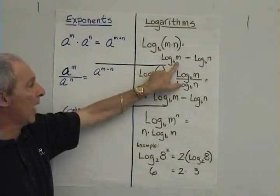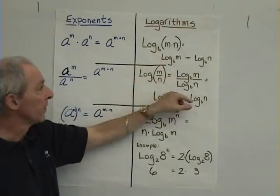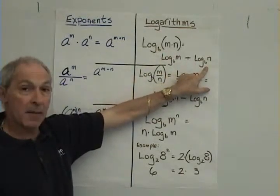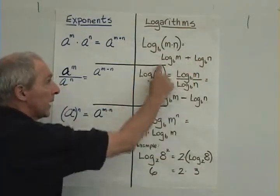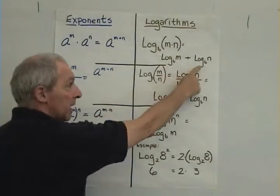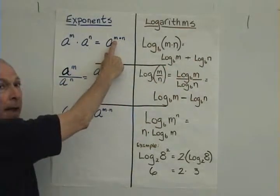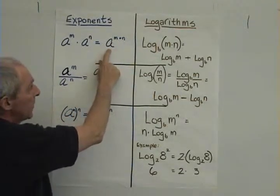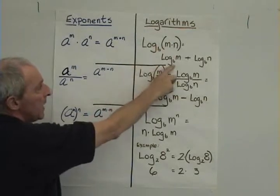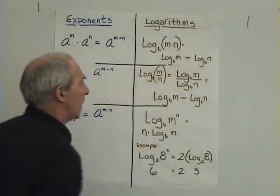the log base b of m is equal to some exponent, and the log in the same base, base b of n, is equal to another exponent. So we can add these two logs together, which signify exponents, just as we can add these two exponents here for this same base. The base is a here, the base is b here, and we're just adding together the representation of two exponents.